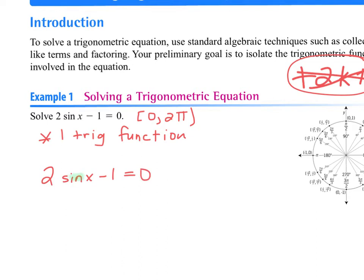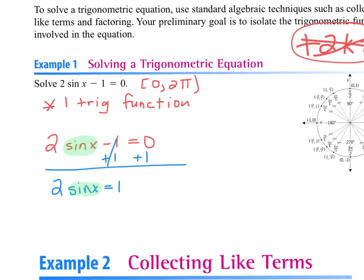First thing I would do is highlight your trig function — sine x. We're solving, and we always want x by itself. So how do we get sine of x by itself? I'm going to add 1 to both sides: 2 times sine of x equals 1. I still want sine of x by itself, so I divide by 2. Now I have sine of x equals 1/2.